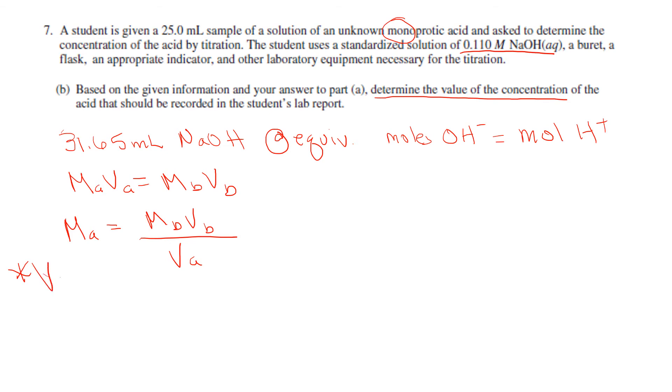So my molarity of my base is 0.110. The volume of my base that was dispensed—I'm going to put that into liters—so it would be 0.03165 liters. And then the volume of my acid, let's go back here, I started with 25 milliliters, so to make that into liters it would be 0.025 liters. And when I calculate all that, you should get 0.139 molarity.